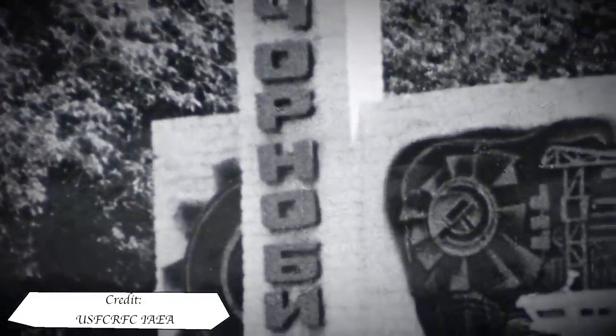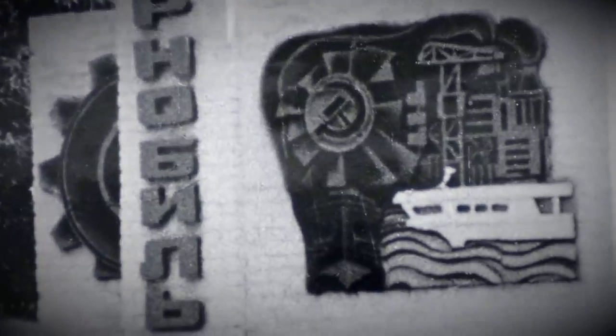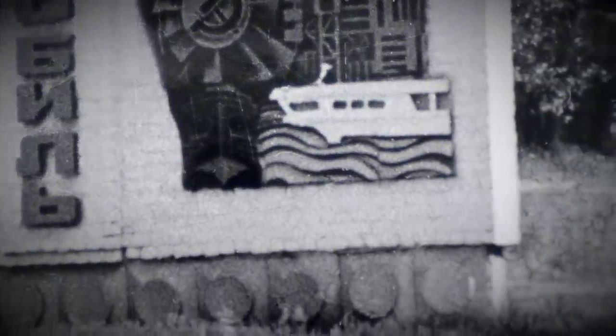In the same year the ground where the new plant would exist was prepared for construction. The Chernobyl nuclear power plant began construction proper in 1972 after the central government decided on what type of reactors the site would house.